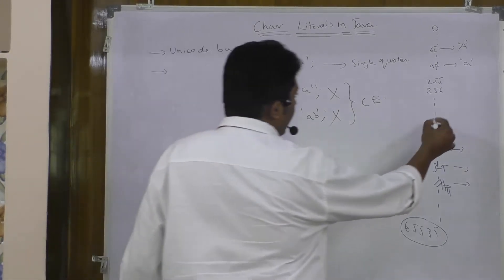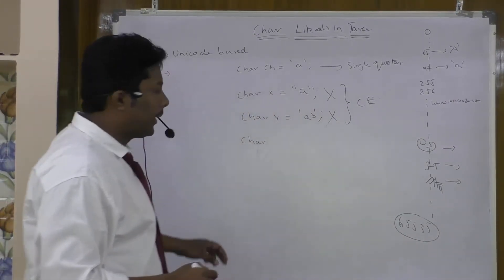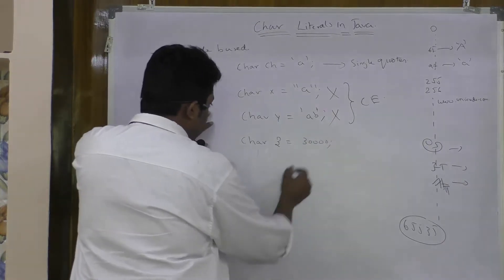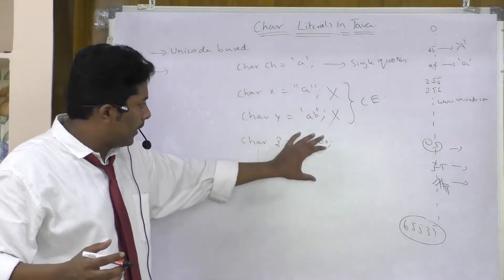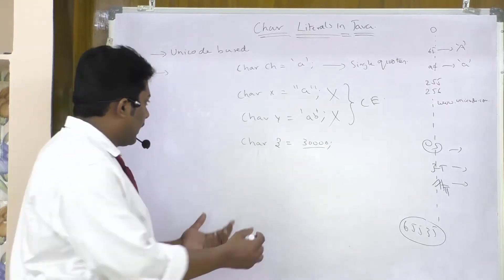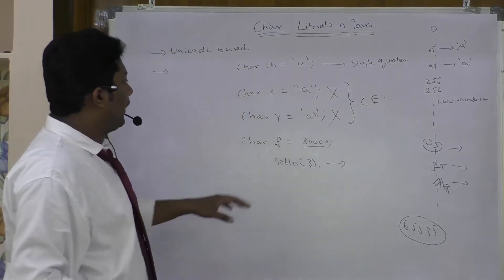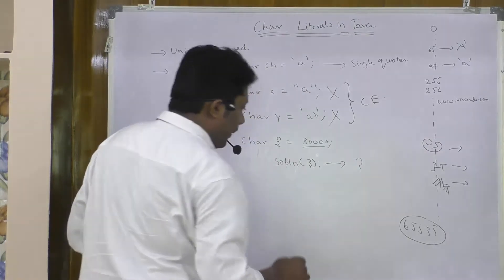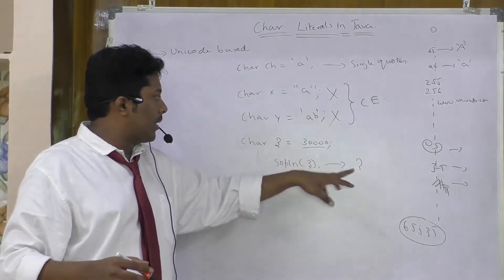If you go to the website www.unicode.com, you can find all the unicode values. If you declare a variable like char z = 30000, that might be a unicode value for some international language such as Persian or French. If you have that font installed in your system, that character automatically gets printed on your screen when you call System.out.println(z). If you don't have the font installed, a question mark appears — but that does not mean the question mark is the unicode value.